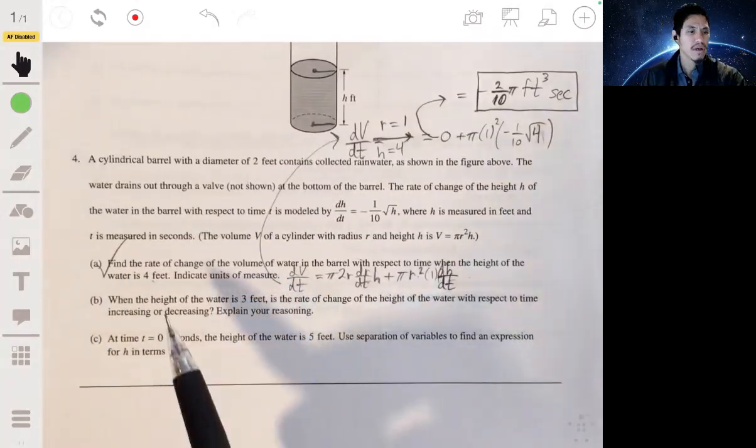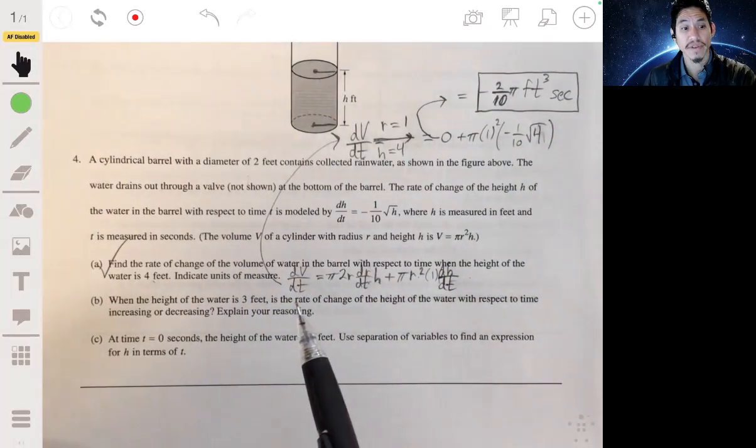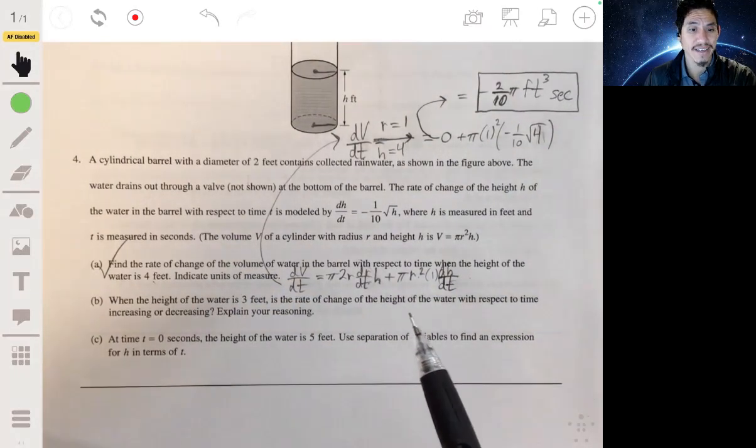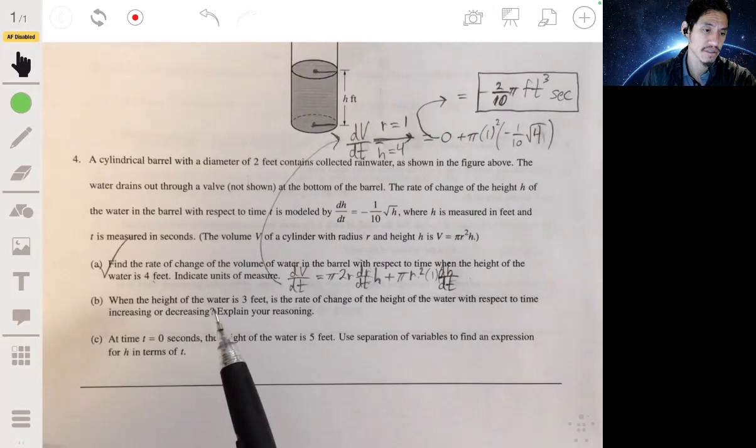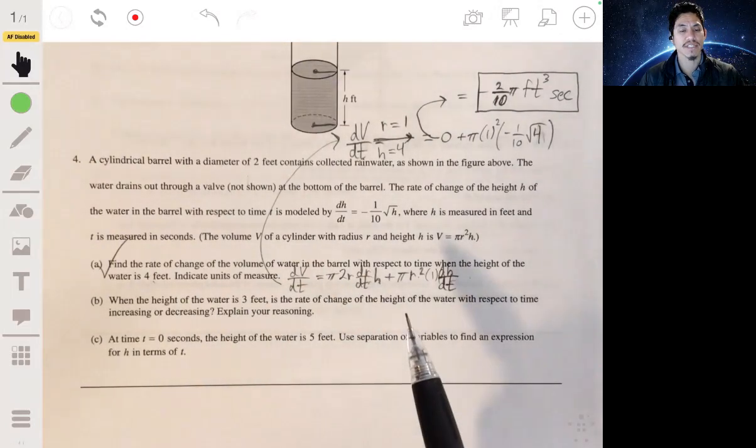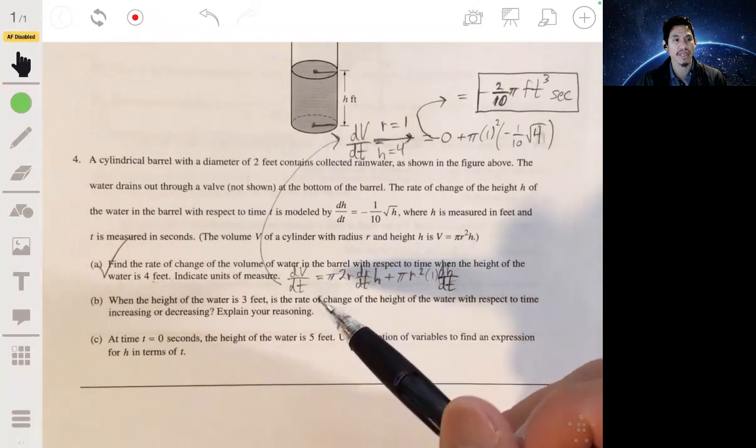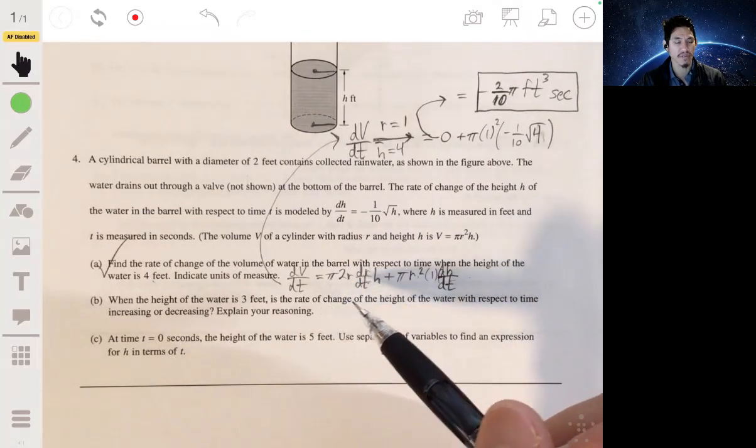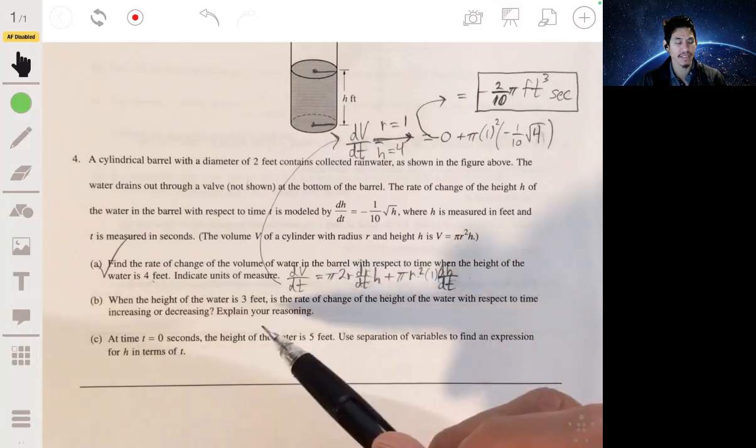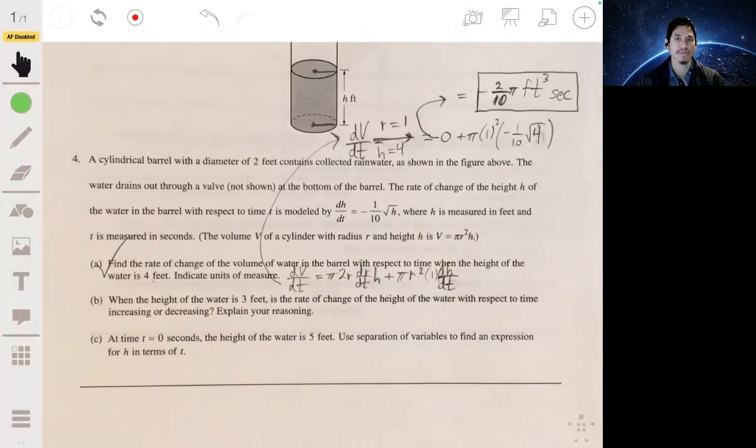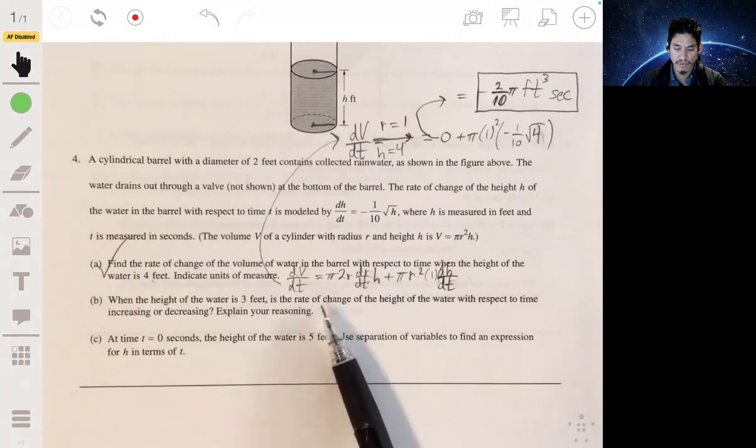Part B, when the height of the water is 3 feet, is the rate of change of the height of the water with respect to time increasing or decreasing? Okay. So what you want to essentially do is figure out what the sign of the derivative is of the rate of change of the height of water at this time. If the derivative is positive, it's going to be increasing. If the derivative is negative, it's going to be decreasing. But keep in mind,